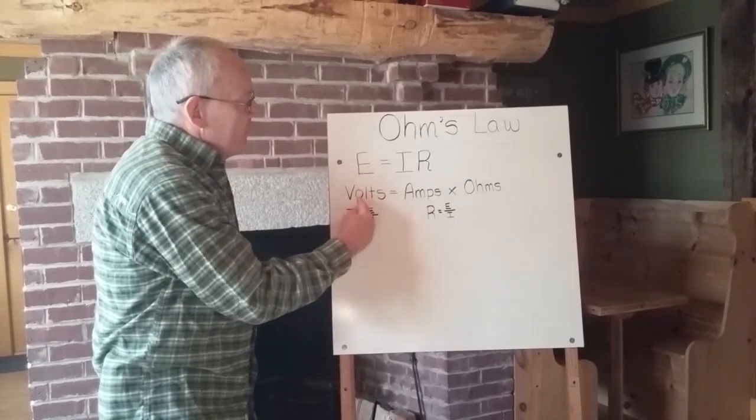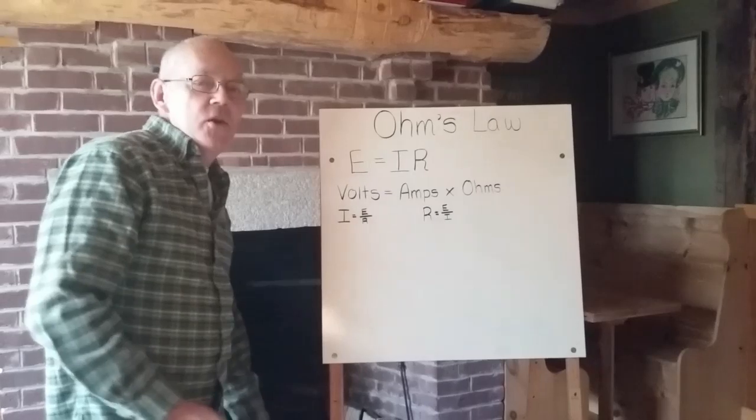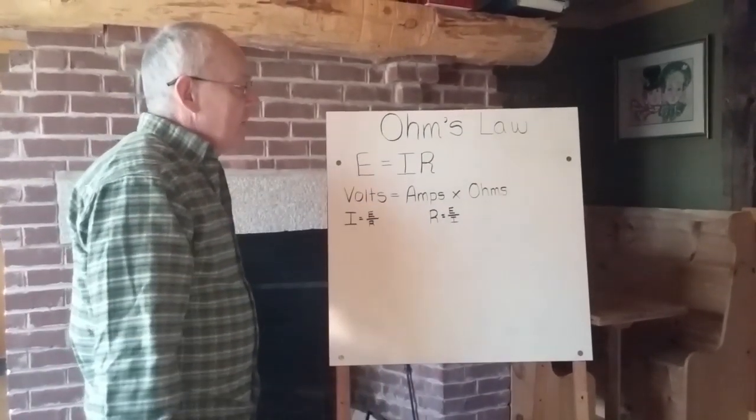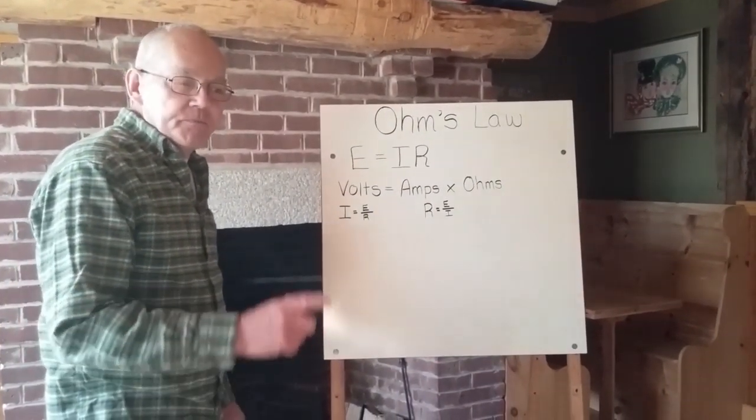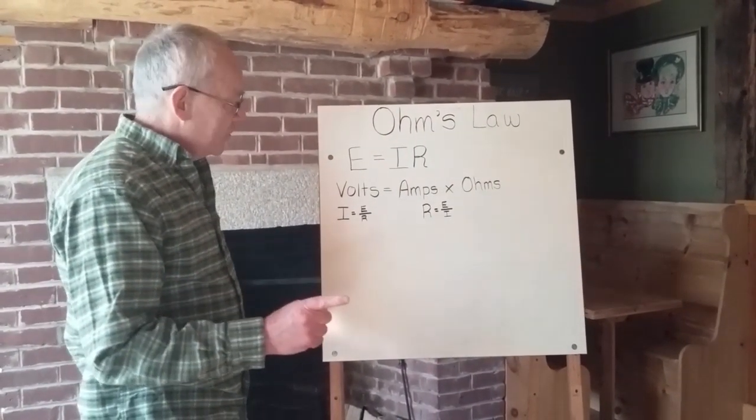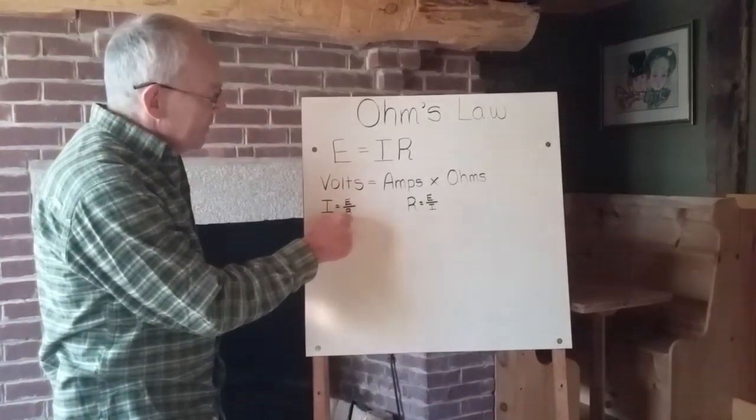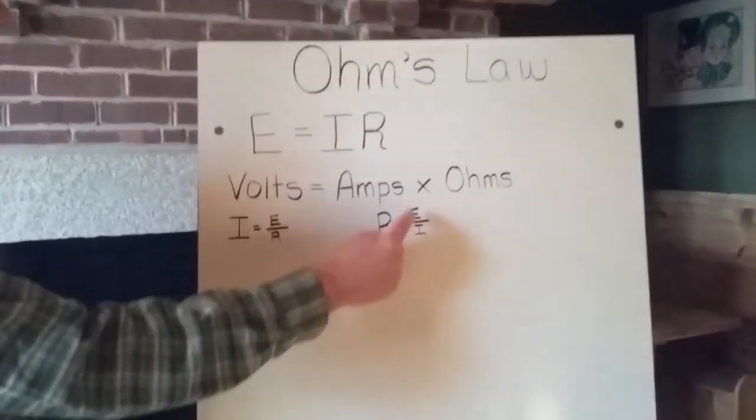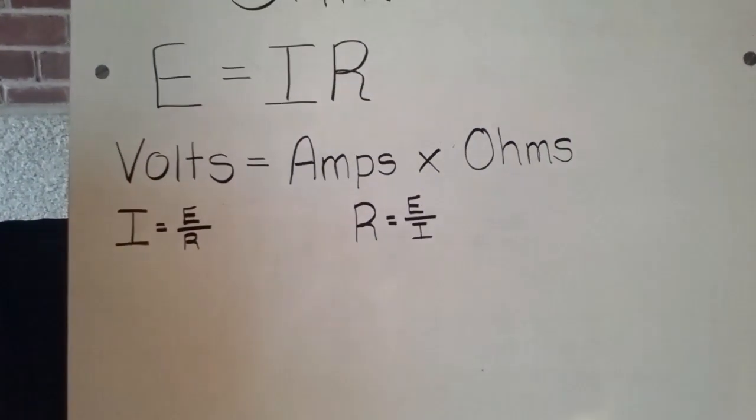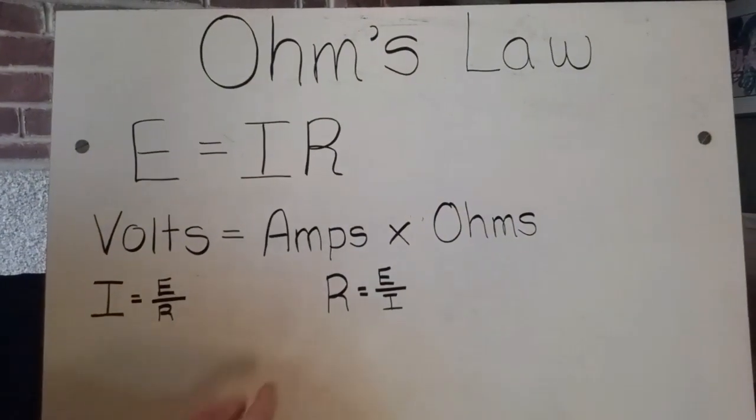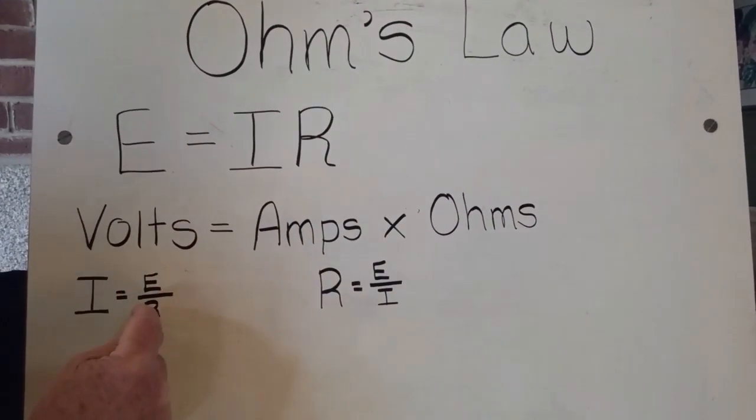So E equals IR, volts equals amps times ohms. Ohms, named after Georg Ohm, the guy that did a lot of this pioneering work. Now, with a little bit of high school algebra, we can rearrange this formula and say I equals E over R, or R equals E over I. Same formula, if you don't believe it, throw some numbers in there and see how it works out. So just like IR equals I times R, E over R is E divided by R.